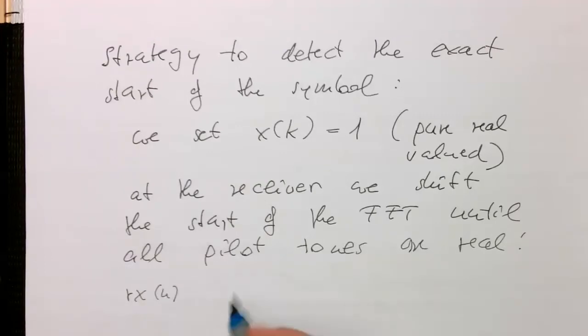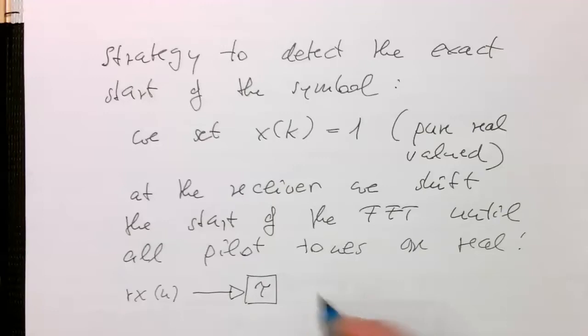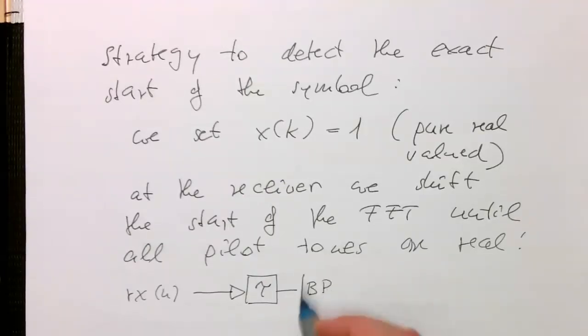that's the received signal. What we do is introduce a delay τ. Then we've got our bandpass modulator here, then we've got our FFT.